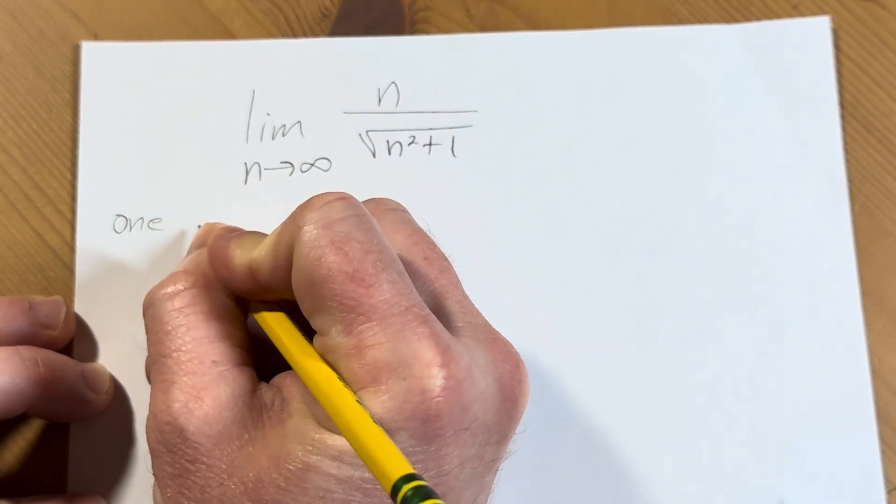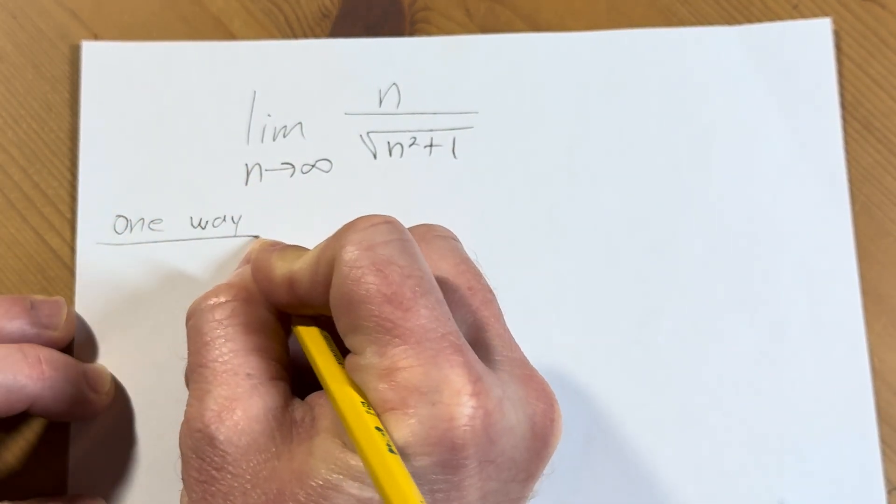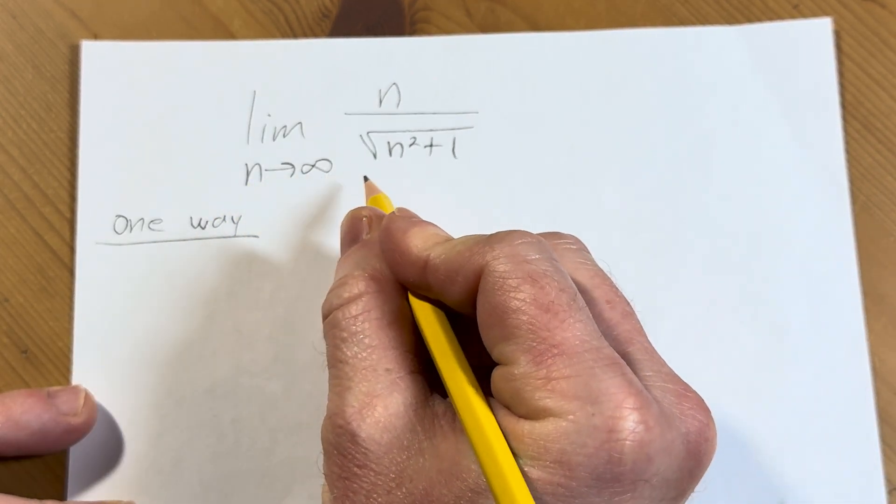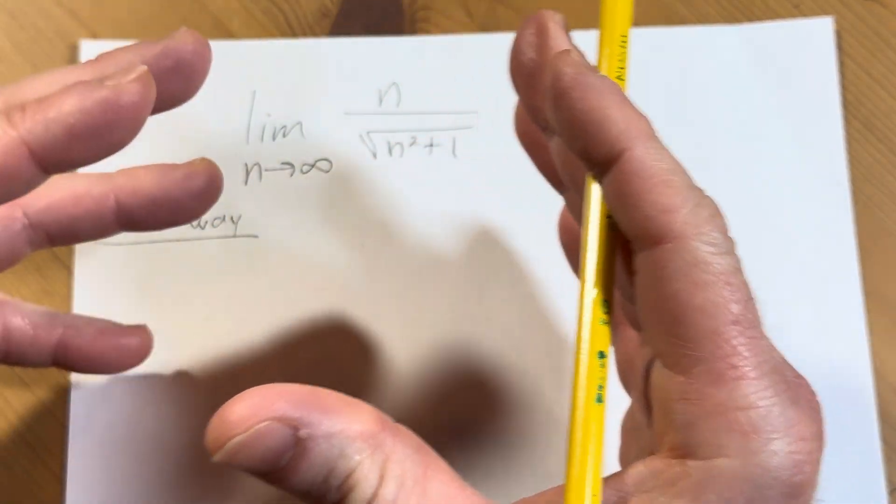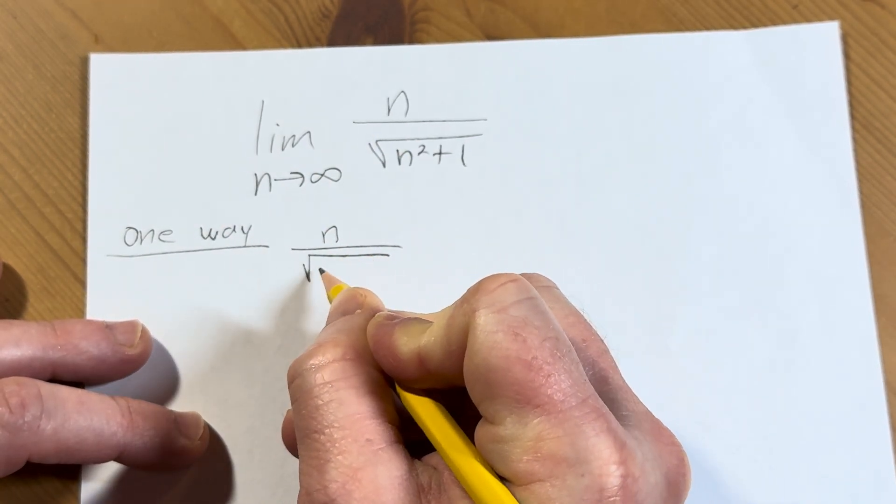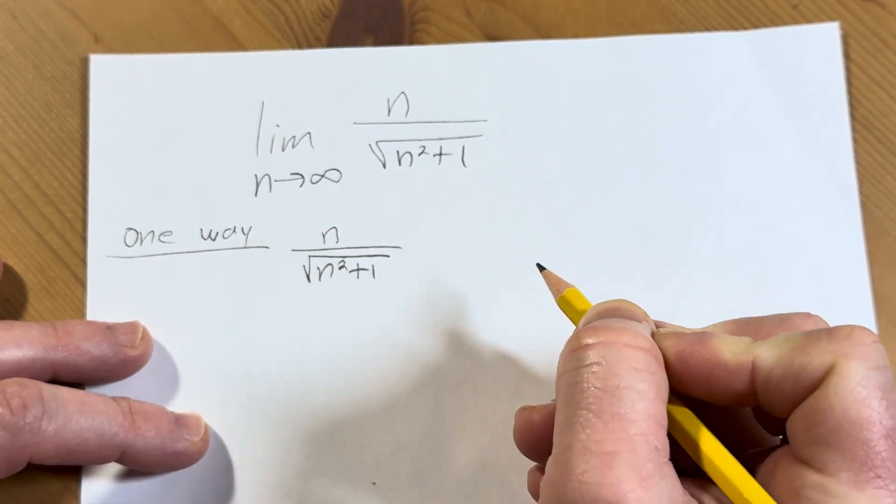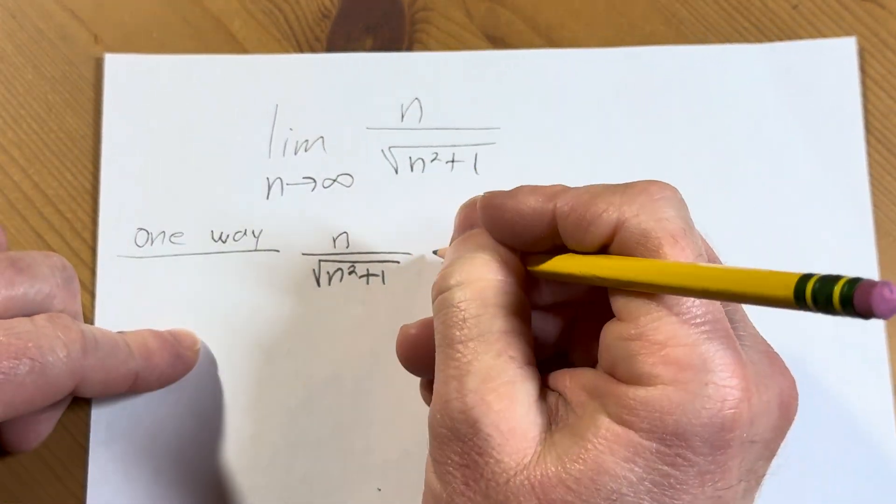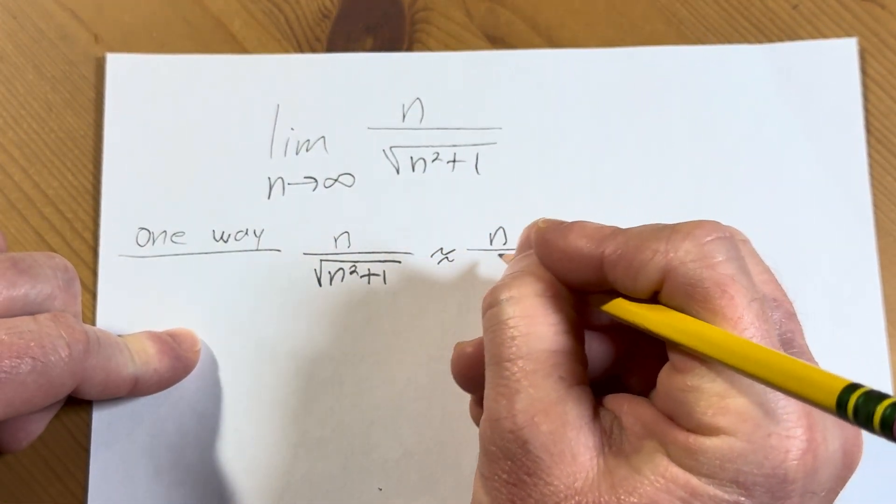So one way to think about this is that n is approaching infinity, so n is growing without bound. You want to ask yourself, what is happening to this creature, right? Well, when n is growing without bound, the 1 is irrelevant. So the 1 doesn't matter.